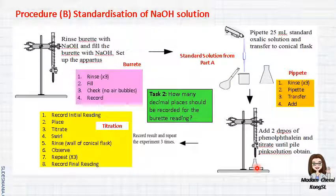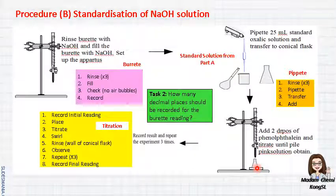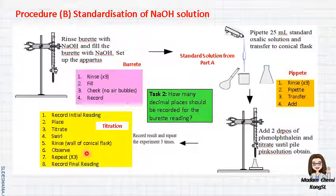For your first, second, and third titration sets, normally the volume of sodium hydroxide would not be more than the gross reading — unless you overshoot. Once you have finished one set of titration, remember to record the final reading.